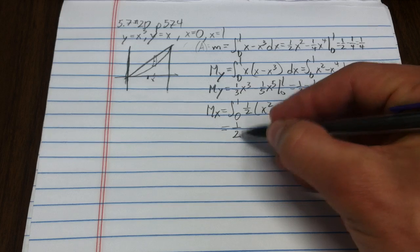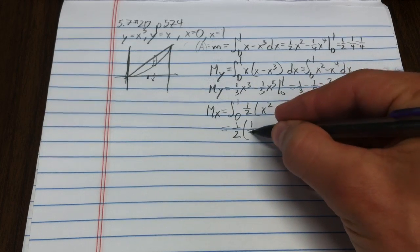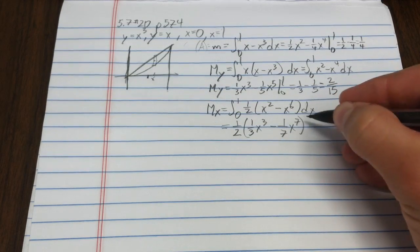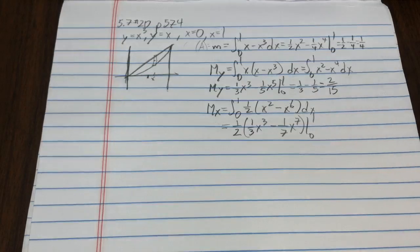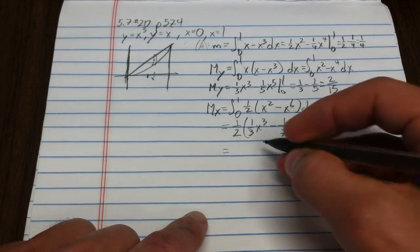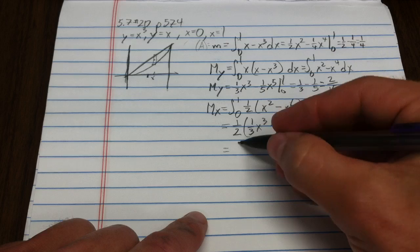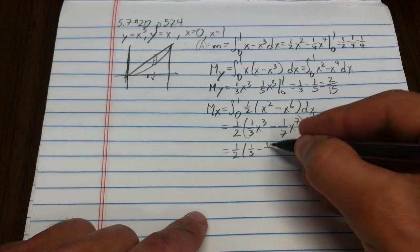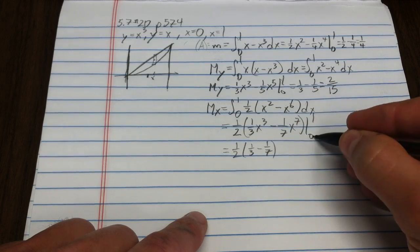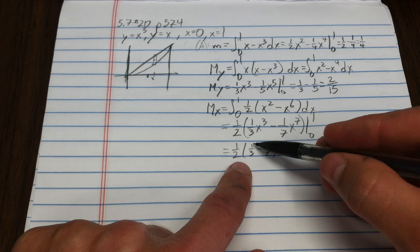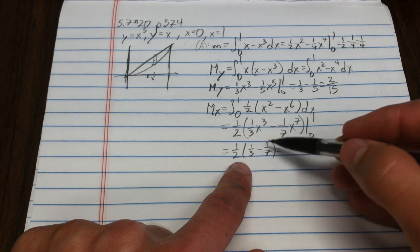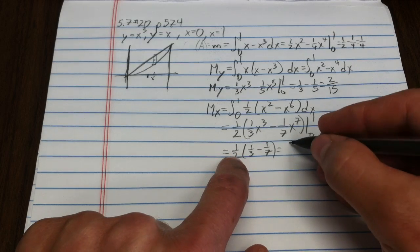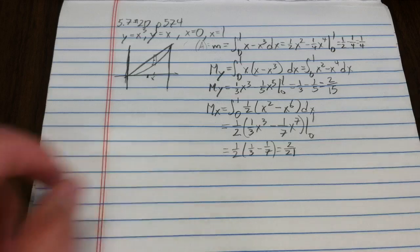We have one-half times one-third x cubed minus one-seventh x to the seventh, evaluated from 0 to 1. I always like evaluating at 0 and 1, it makes my life more pleasant. I have one-half, one-third minus one-seventh. This would be seven twenty-firsts minus three twenty-firsts, which is four twenty-firsts. Dividing that by two gives me two twenty-firsts.